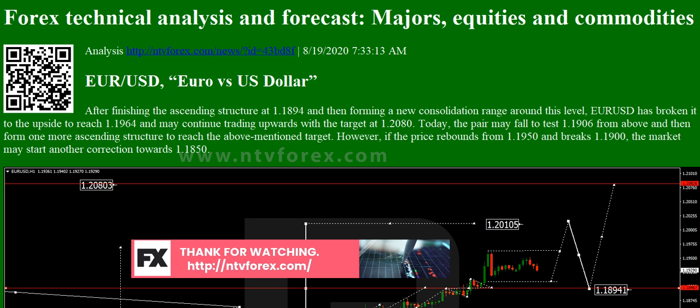GBPUSD: After completing the ascending wave at 1.3263, the pair is falling towards 1.3208 and may later grow to reach 1.3232, thus forming a new consolidation range. If the price breaks this range to the downside, the market may start a new correction towards 1.3155; if to the upside, it may expand the range up to 1.3300.